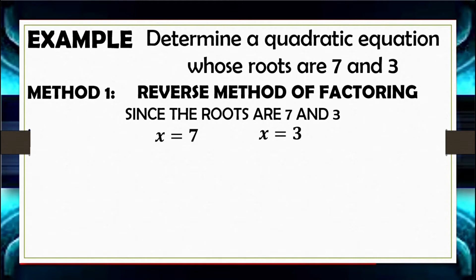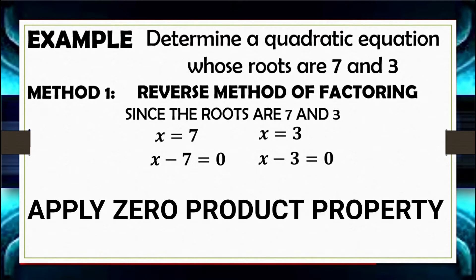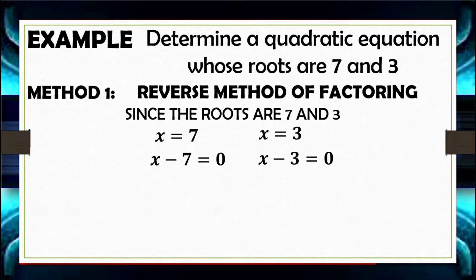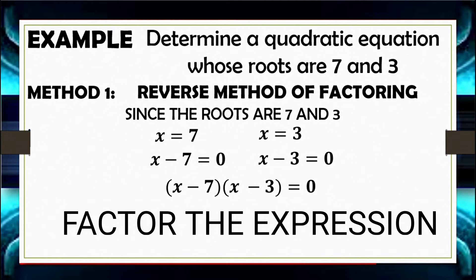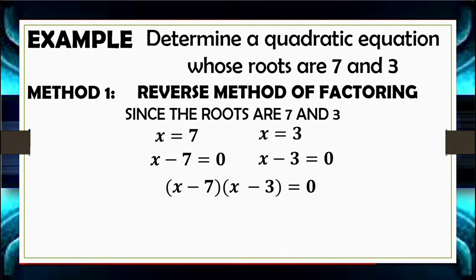This is a result when we simplify the linear equation. X minus 7 equals 0 and X minus 3 equals 0 are considered to be factors when we apply the zero product property. Because both factors are equal to zero, we can write the quantity X minus 7 times the quantity X minus 3 equals 0. We can then simplify this by applying the FOIL method.